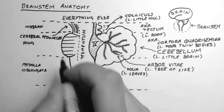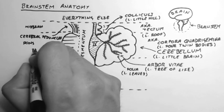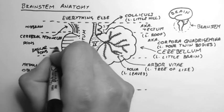Now this part of the pons that sticks out here. We call the basilar pons.